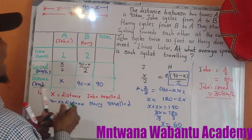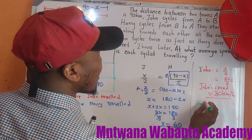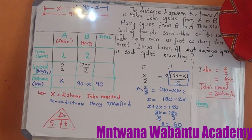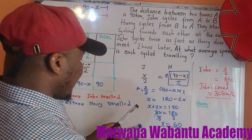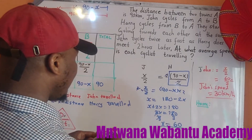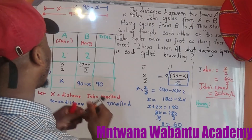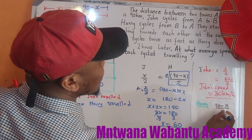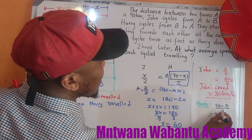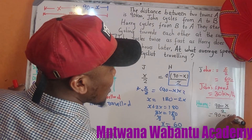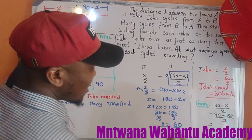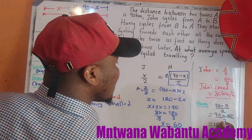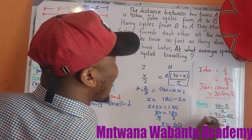For Harry, his speed equals 90 minus x over 2. So that's 90 minus 60 over 2, which is 30 over 2, which equals 15 km/h. So Harry's speed is 15 km/h.